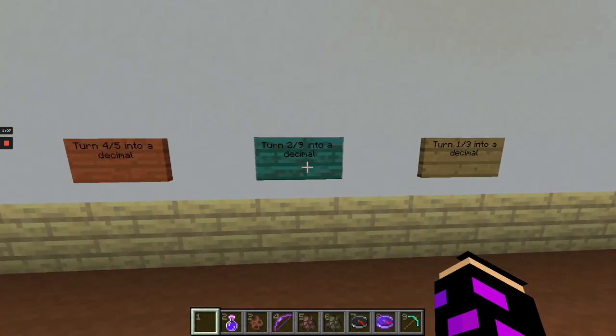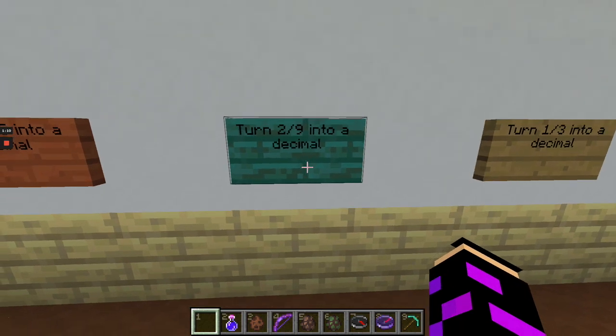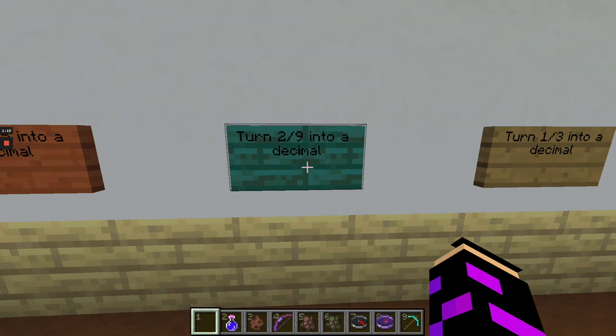Now let's look at this sign. This has turn two-ninths into a decimal. It should be the same thing. Just divide two by nine. Let's try and see what happens.